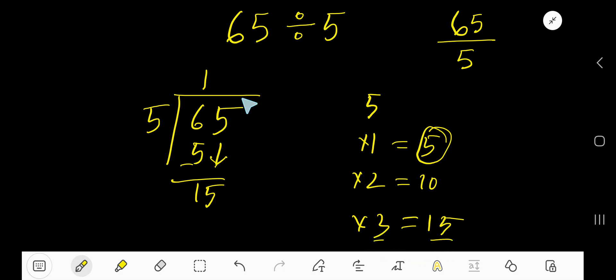3 times. 3 times 5 equals 15. If you subtract then 0. That is, if you divide 65 by 5 you are getting 13. That is 13 is the answer.